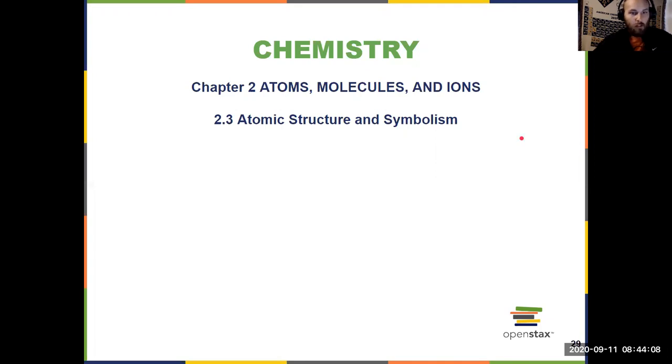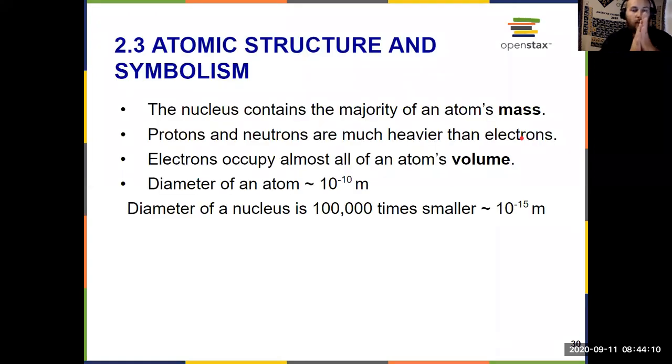Atomic Structure and Symbolism. Some information that we know from our prior videos: The nucleus contains the majority of the atom's mass. That's where all the protons and neutrons are. Those have appreciable mass, whereas electrons do not. But the volume of the atom is really occupied by the electron clouds. So you've got this tiny little nucleus in the middle of an atom surrounded by a cloud of electrons that take up most of the volume.